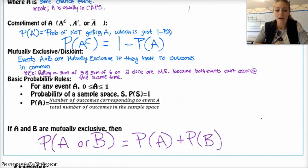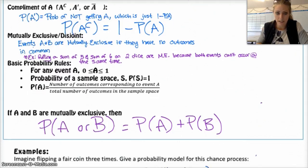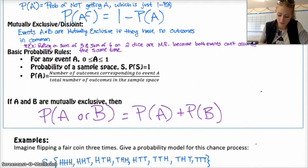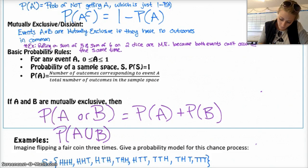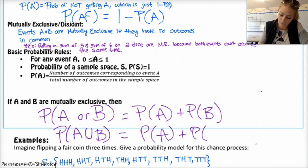Something to keep in mind with notation: you might also see P(A ∪ B) — that cup symbol also means 'or.' So P(A ∪ B) equals the probability of A plus the probability of B for mutually exclusive events.